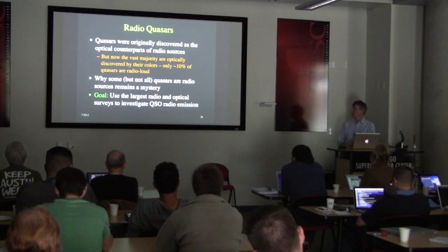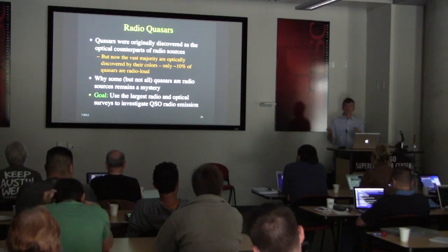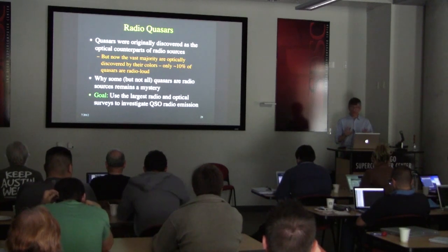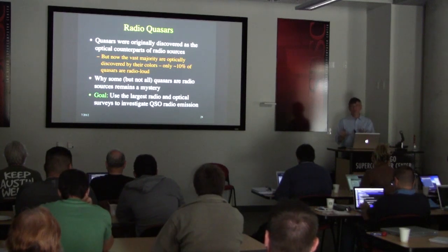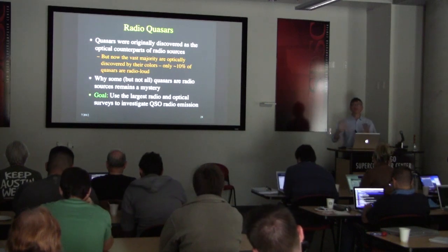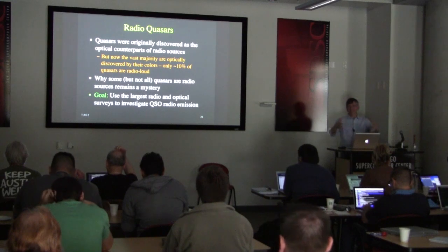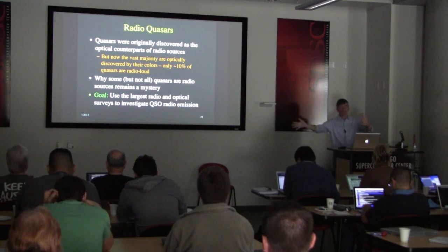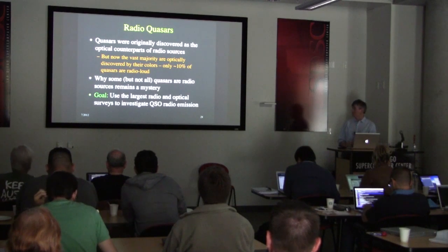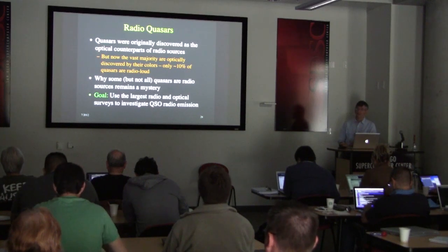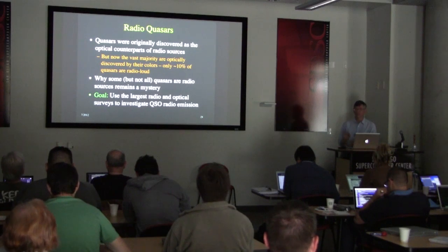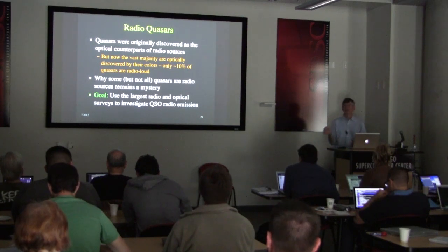The distribution of radio luminosities for quasars is really weird — it's not a Gaussian. Most quasars are radio quiet, with very weak radio emission, while about 10% are extremely luminous radio sources producing tremendous amounts of radio emission. Why some quasars have bright radio emission but most don't is still something of a mystery. People are making progress, but it's hard to understand exactly what's the difference between radio quasars and non-radio quasars.